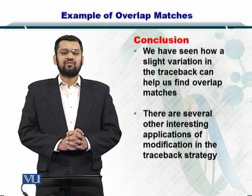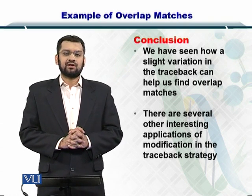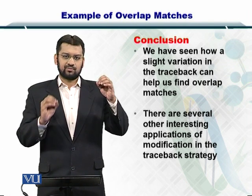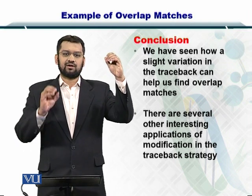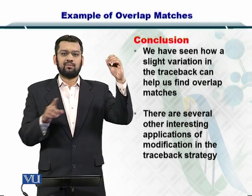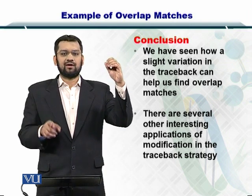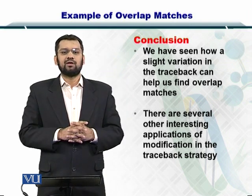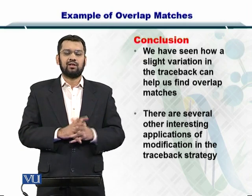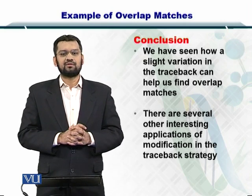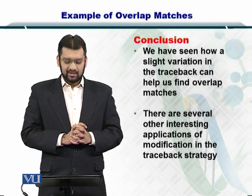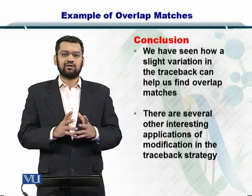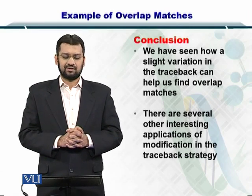So in conclusion, we have seen that a slight modification in the traceback strategy, that is instead of starting from the bottom right to the top left, we have just started from the maximum score in the bottom row or the left column and stepwise traced to the zero in the top row or the left column. And this gives us the trailing edges or leading edges. There are other interesting applications of other traceback strategies as well, which we will see later.